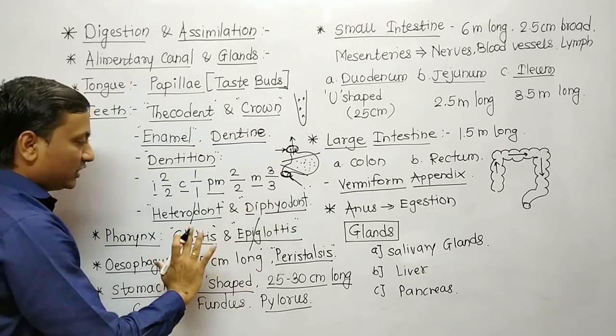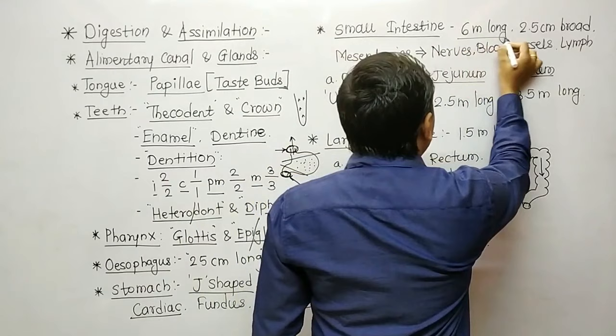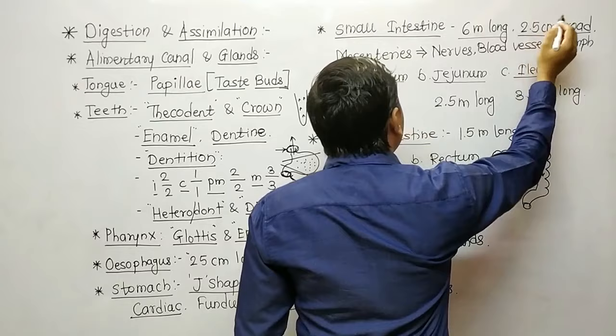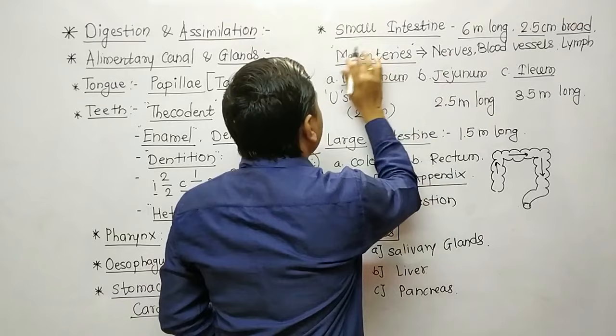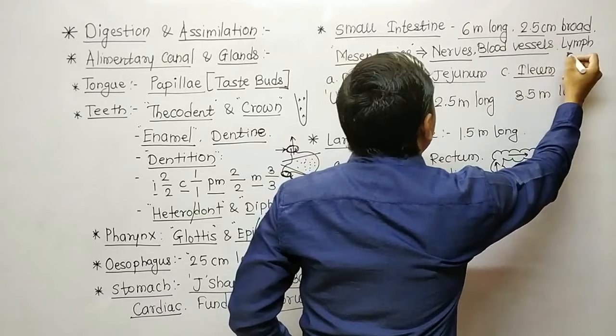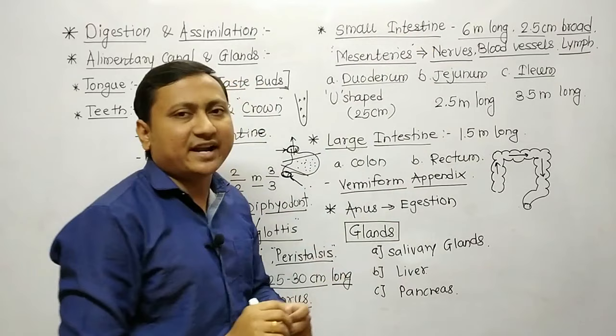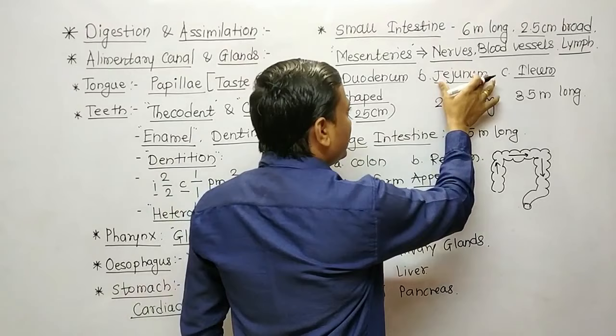The next alimentary organ is the small intestine. Though it is called small, it is 6 meters in length and 2.5 cm in diameter. The coils of the small intestine are interconnected by a structure called mesenteries, which supply nerves, blood vessels and lymph. The small intestine is divided into three parts: duodenum, jejunum and ileum. Duodenum is U-shaped with 25 cm length, jejunum is around 2.5 meters long, and ileum is 3.5 meters long.